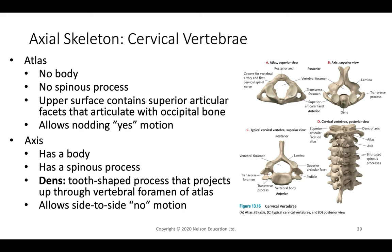The cervical vertebrae are unique. The first two are called atlas and axis. Atlas has no spinous process, allowing us to nod yes; its upper surface has articulating facets that connect to the occipital bone. Axis has a spinous process, a body, and a special tooth-shaped projection called the dens, which projects up through the foramen of the atlas and allows us to shake our head no.